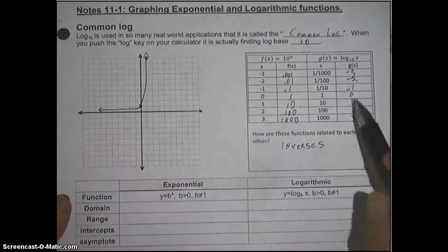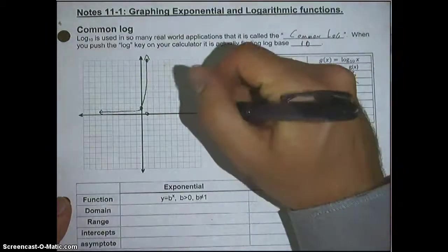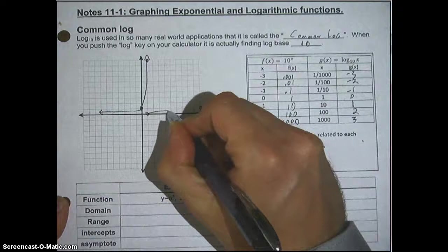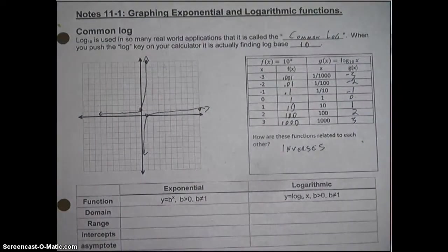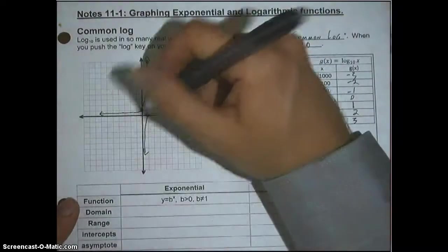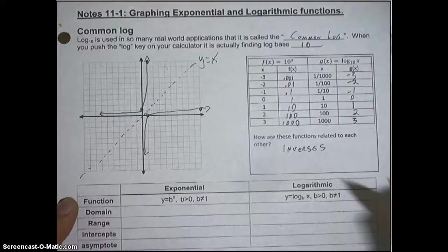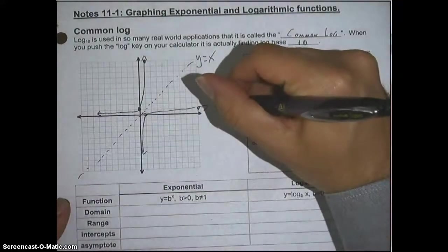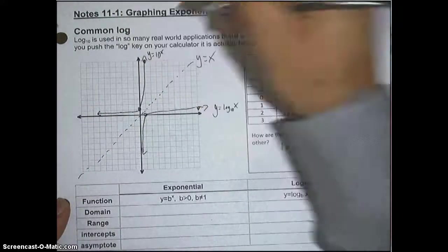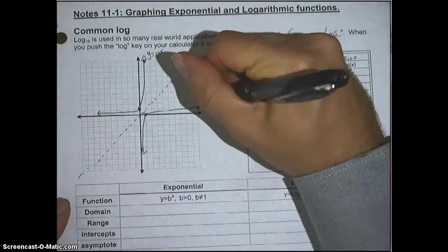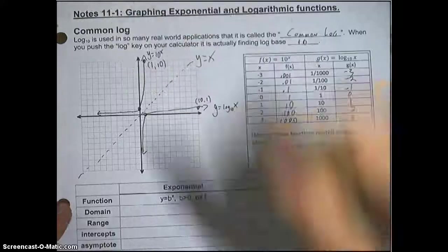The log function is kind of similar. Instead of 0, 1, it's at 1, 0, which is right here, and 10, 1, which is right here. So it's going to go out to the right and up forever, but then it's going to approach the y-axis asymptotically. Now hopefully you remember that inverses, that happens, because they are reflections over this line, y equals x. So this is y equals log base 10 of x. This is y equals 10 to the power of x. And this point right here is 10, 1. This one is 1, 10. So they're inverses.